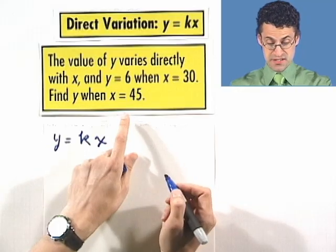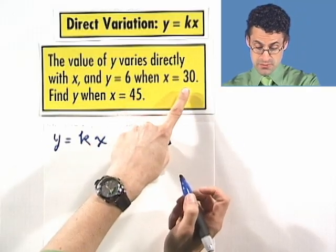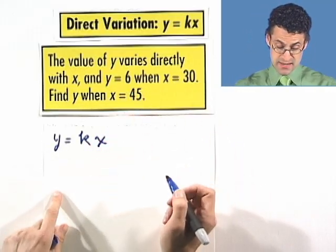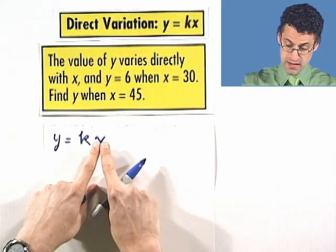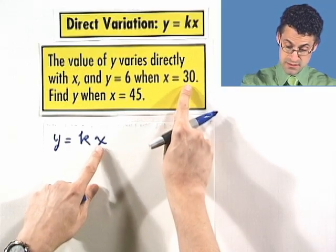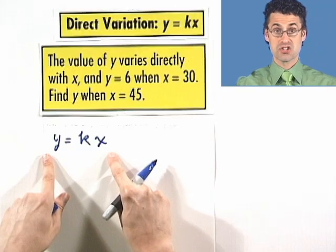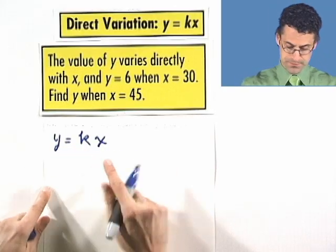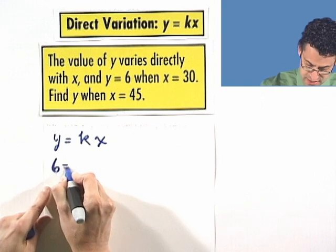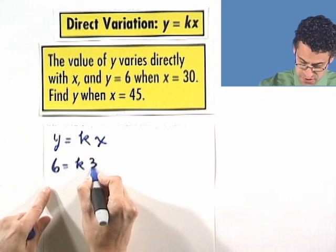We also know that it's going to satisfy the following. When x equals 30, y has to be 6. That means if I plug in 30 for x and 6 for y, this equation has to hold. That will allow me to figure out the k.